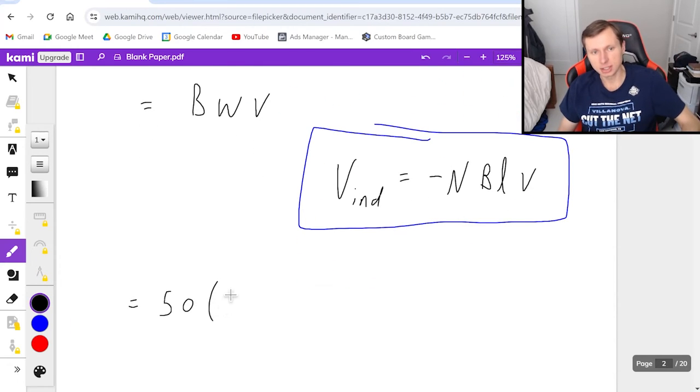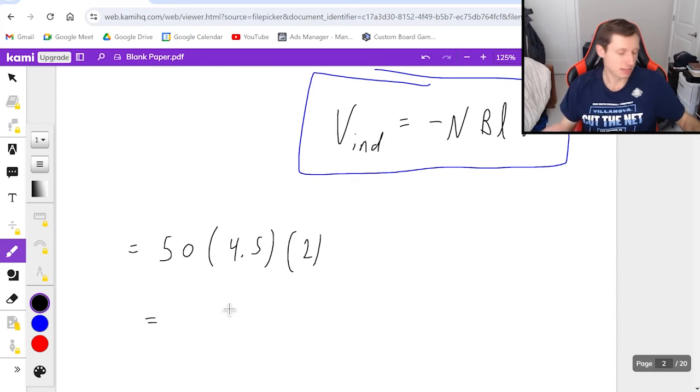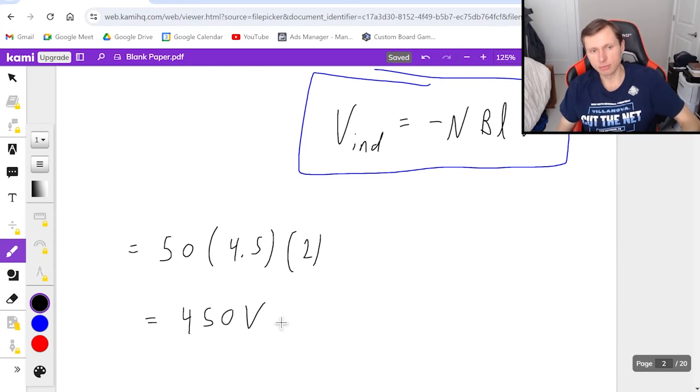So anyways, B is 50, W is 4.5, velocity is 2. I just have to plug this in a calculator, and I'll get 450 volts.